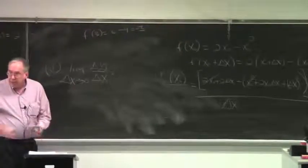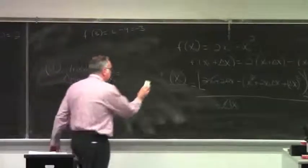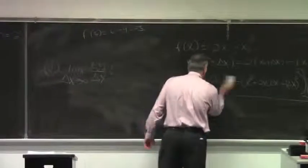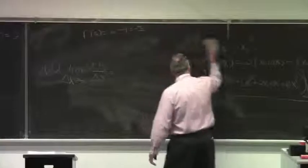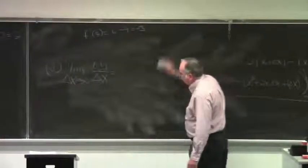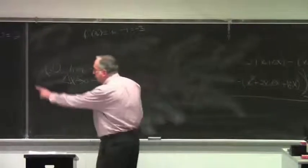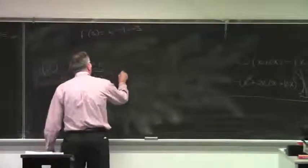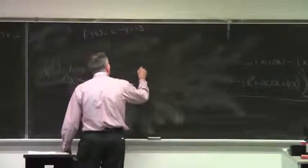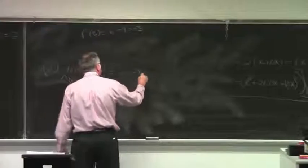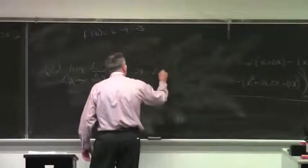We just substitute in for what delta y over delta x is. We've already found that. The general formula for the difference quotient is this: 2 minus 2x₀ minus delta x. That's the general formula.